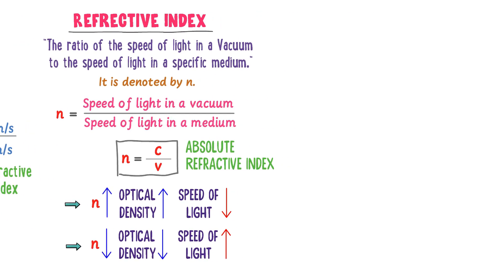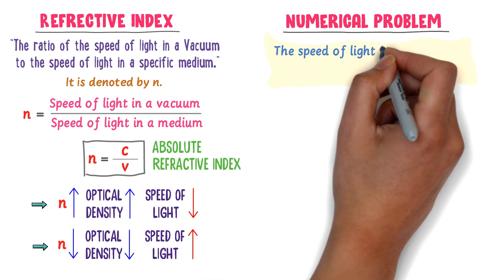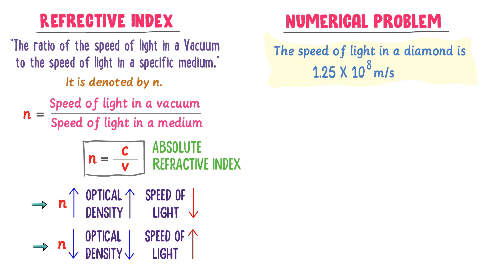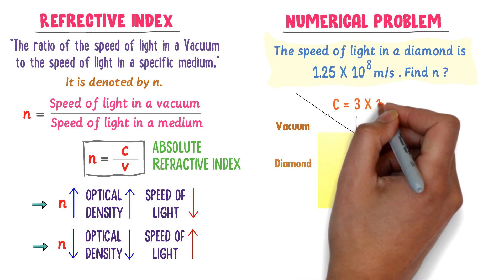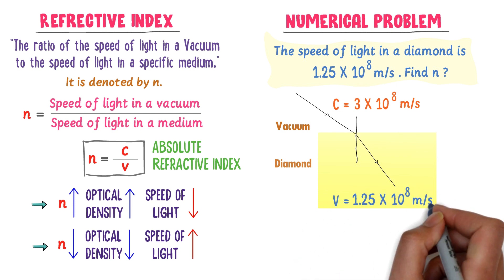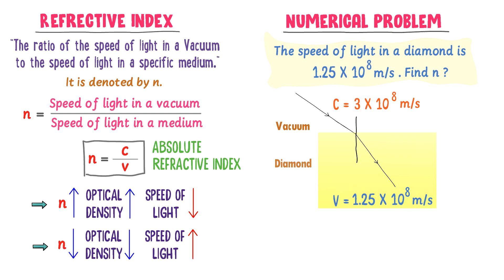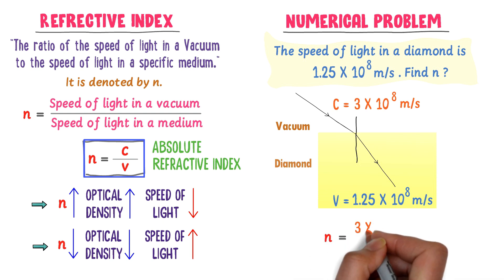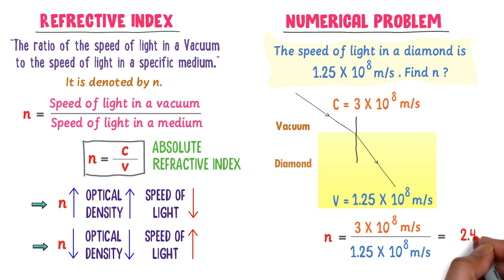Now let me show you how to solve numerical problems involving refractive index. For example, the speed of light in a diamond is 1.25×10⁸ m/s. Find its absolute refractive index. Let me draw a freehand diagram. Let the incident light ray travel from vacuum and enter into the diamond. The speed of light in vacuum is c = 3×10⁸ m/s, and the speed of light in diamond is v = 1.25×10⁸ m/s. Using n = c/v and plugging in the values, after calculation I get 2.4.